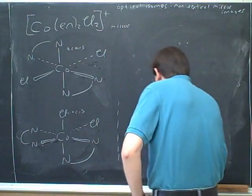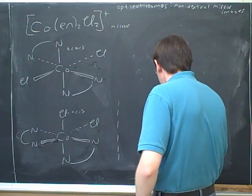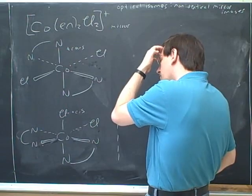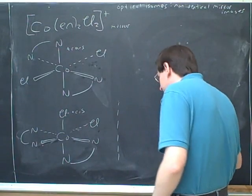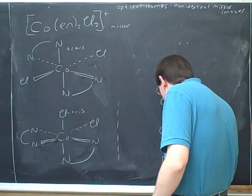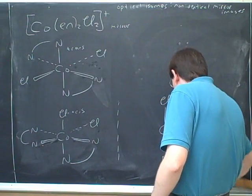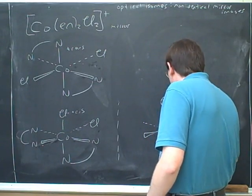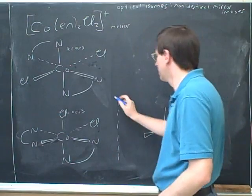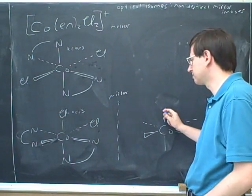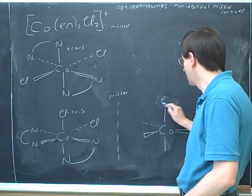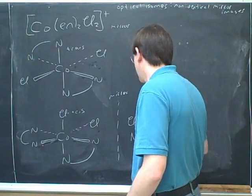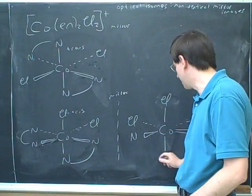Maybe the cis has an optical isomer. Well, again, I'll draw the mirror. Okay, so if this is the mirror, who should go here? Cl. And here? Cl. No, it's here. And here? N. So this was right. And here? N.